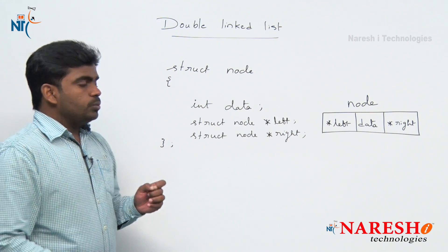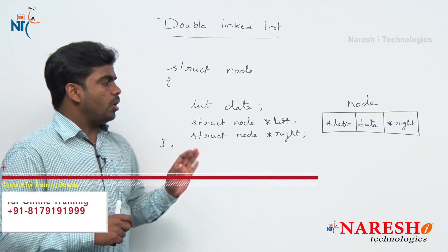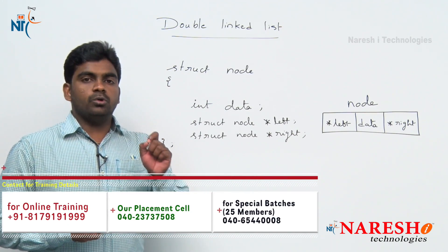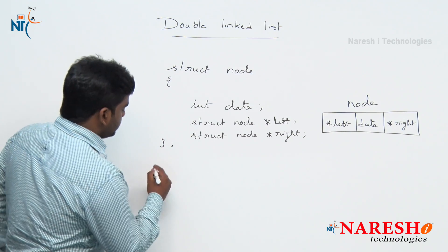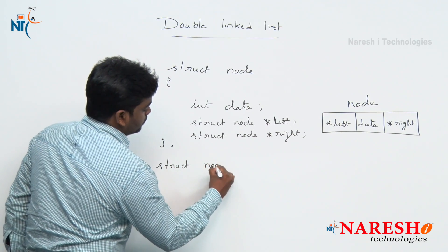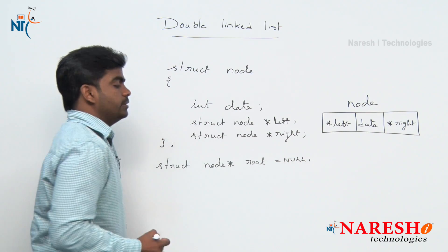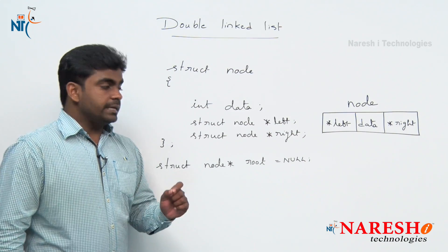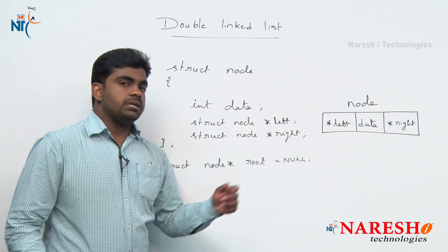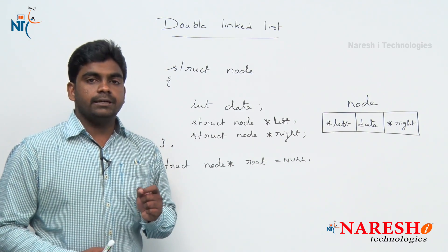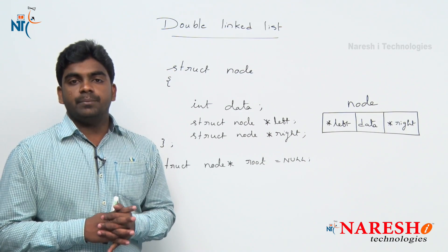How will the complete double linked list data structure look - how all the nodes are connected, and how the root pointer is connected to the first node? First of all, we need to declare a global pointer variable of type struct node. That is the root variable, and initially its value is null - it is not pointing to any node, meaning the list is completely empty.